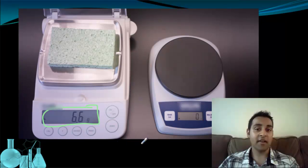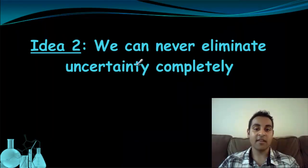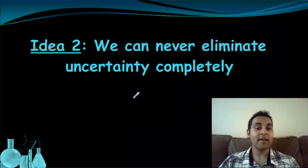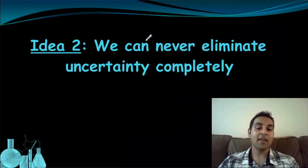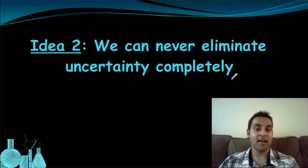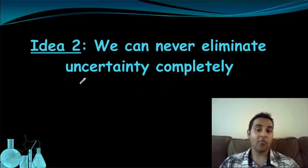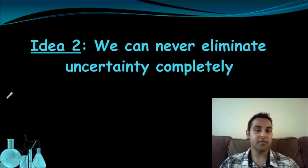This brings us to our next big idea: that we can never eliminate uncertainty completely. We can keep getting more and more accurate, but we can never get rid of this uncertainty entirely — it will always be there. So that means we need to have a way to represent our uncertainty in our measurements.